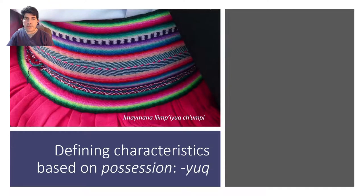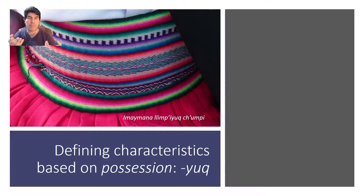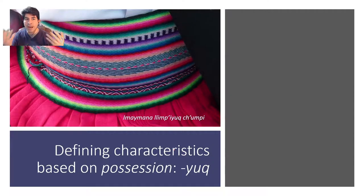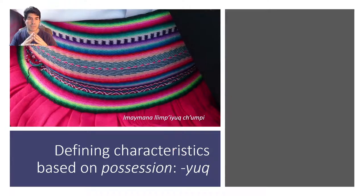There is another way to describe somebody — based on something that person has. This describes someone based on their possessions: what color clothing they wear, what color hair they have, what type of eyes or skin, or even a property like a nice car. In this case, we use the suffix '-yoj' to indicate that someone has something as a defining characteristic. So you can say 'ayin umayoj runa,' meaning a person with a good head — that is, a serious, thoughtful person.